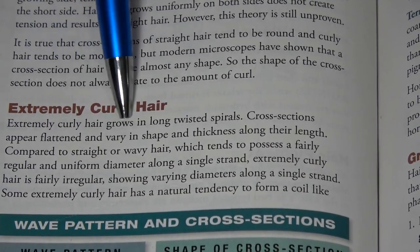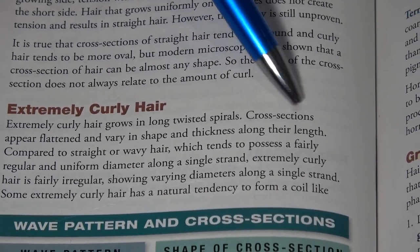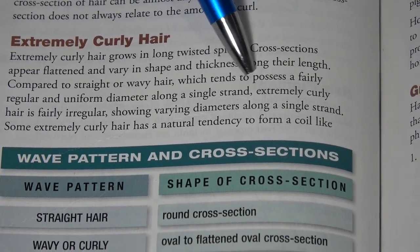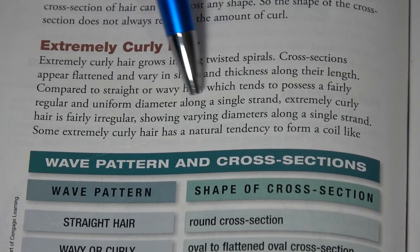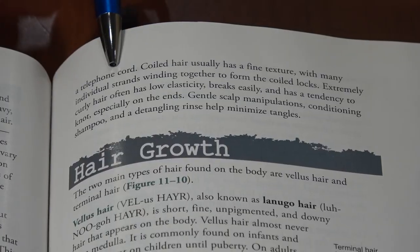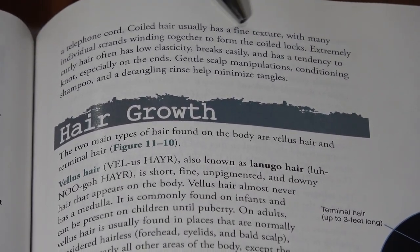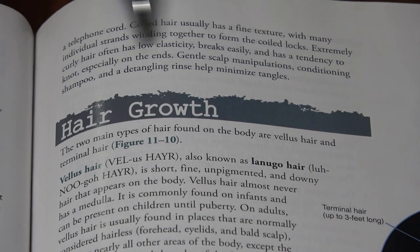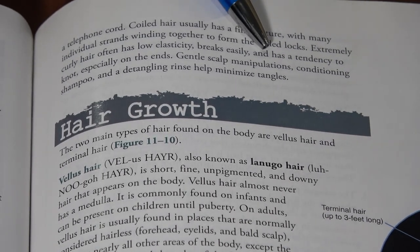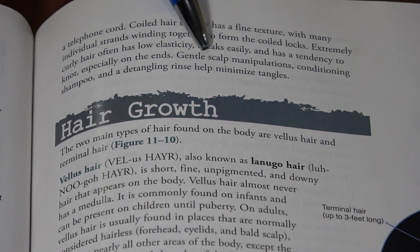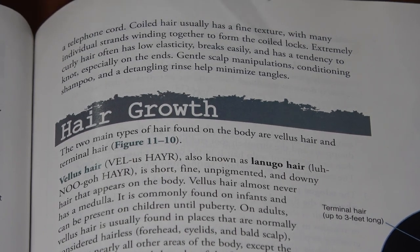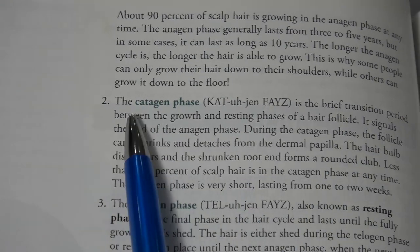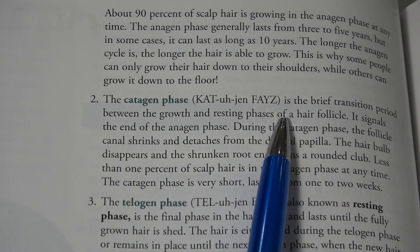Extremely curly hair grows in long, twisted spirals. Cross-sections appear flattened with varying shape and thickness along their length, compared to straight or wavy hair which tends to have a fairly regular and uniform diameter. Extremely curly hair often has low elasticity, breaks easily, and has a tendency to tangle, especially at the ends. Gentle scalp manipulations, conditioning shampoos, and detangling rinses help minimize tangles.